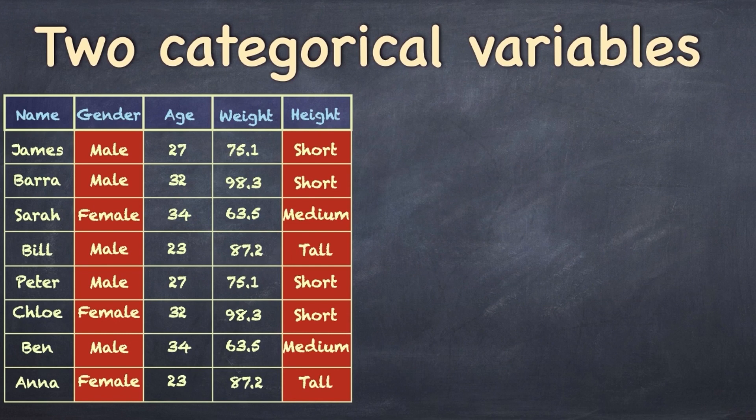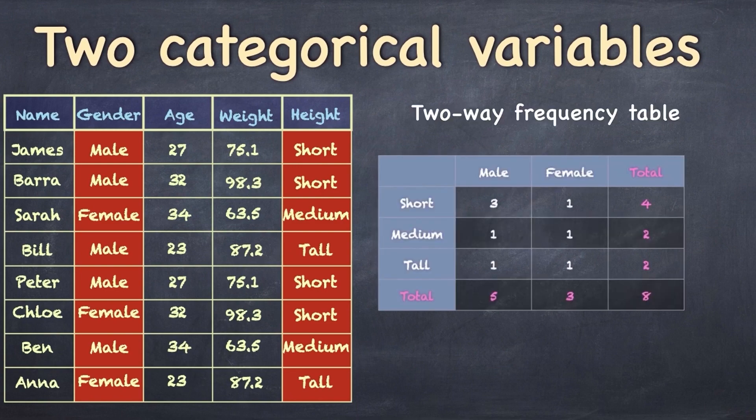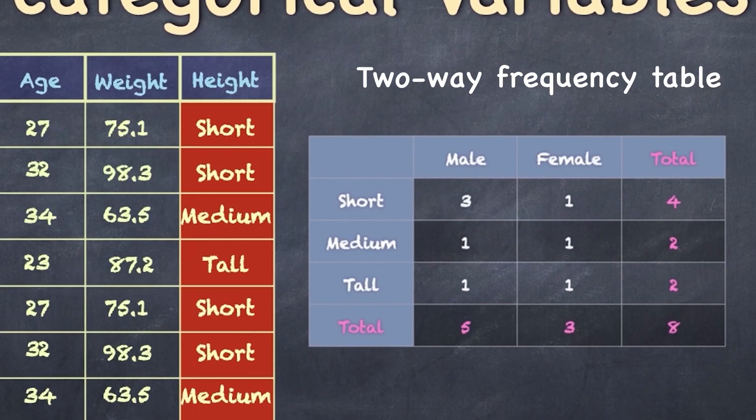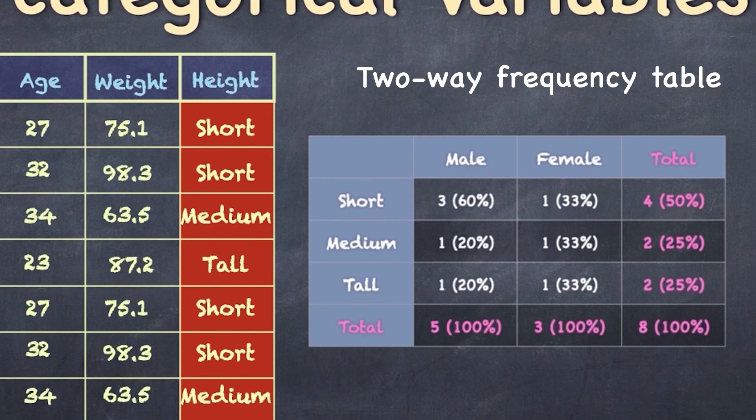Now, let's think about two categorical variables, gender and height. First thing we do is we create a two-way frequency table, two ways because we've got both of the variables involved now and we use one in the columns and one in the rows. And again, we can calculate the relative frequency or the percentage which can be represented in brackets next to the value. So I've calculated what percentage each cell is relative to the column total for the column that it's in.